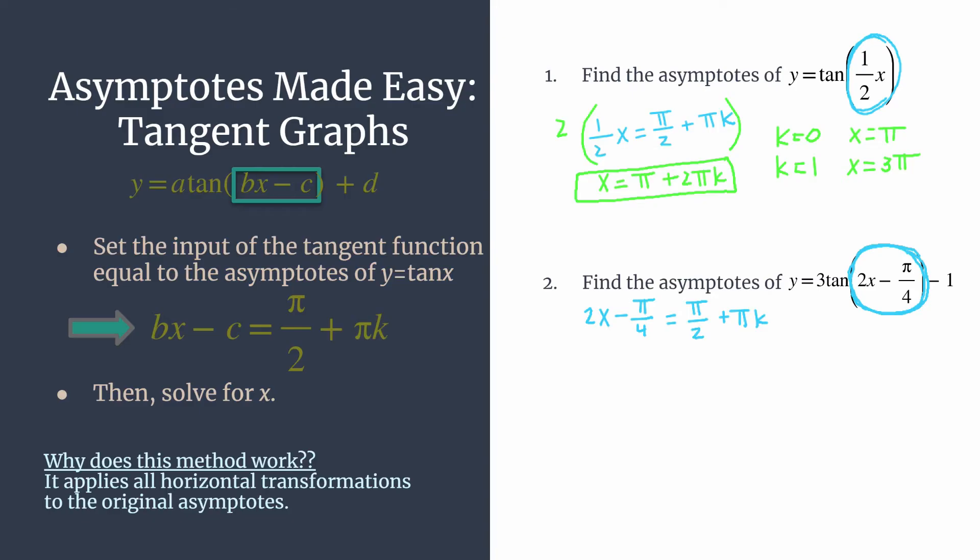Remember, this is applying all of the horizontal transformations to the asymptotes. So this will get you a really good idea of what your graph looks like just by transforming the asymptotes. Now we need to solve for x. So the first thing we should do is add pi over four to both sides of this equation. That'll get us one step closer to isolating the x, just like your basic algebra.